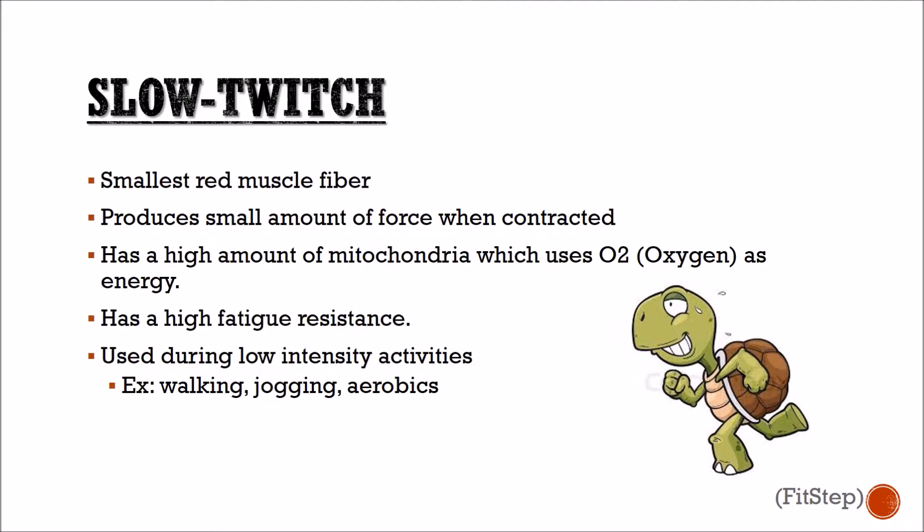Slow twitch muscle is a small red muscle fiber. It produces a small amount of force when the muscle contracts. It contains a high amount of mitochondria which uses oxygen as energy. It has a high fatigue resistance and is usually active during low-intensity activities such as jogging and walking.